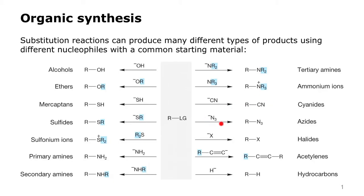Azide is a good nucleophile and makes organoazides. The halides, particularly iodide and bromide, are good nucleophiles. There are carbon nucleophiles in the form of acetylide ions to produce acetylenes — very important, as this produces a new carbon-carbon bond. And there are even scenarios where you can use a hydride ion as a nucleophile and transform a substrate into a hydrocarbon.